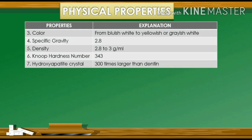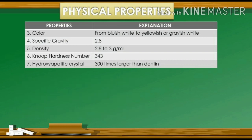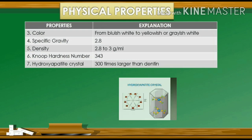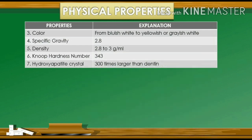The density of enamel is 2.8 to 3 g/ml. It has a Knoop Hardness Number (KHN) of 343, while dentin has 68 KHN and cementum has 40 KHN. Enamel resists masticatory impact of about 10 to 20 kg per tooth. The hydroxyapatite crystal of enamel is 300 times larger than that of dentin.